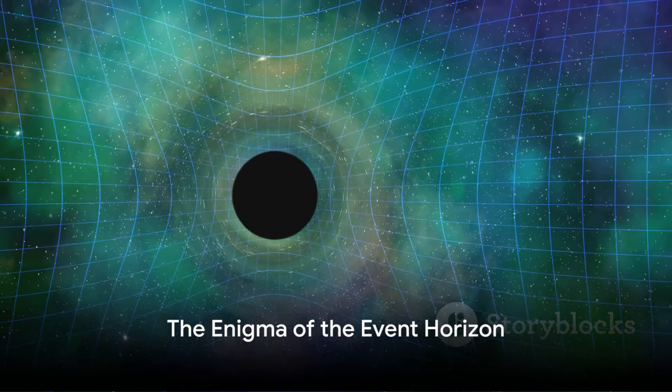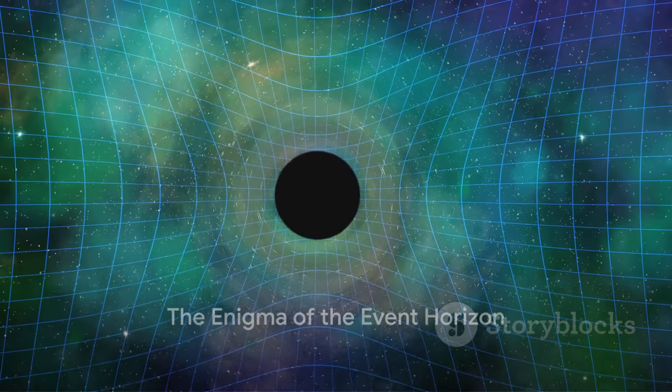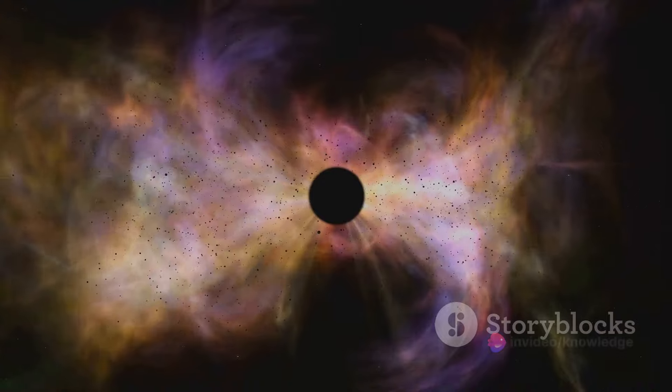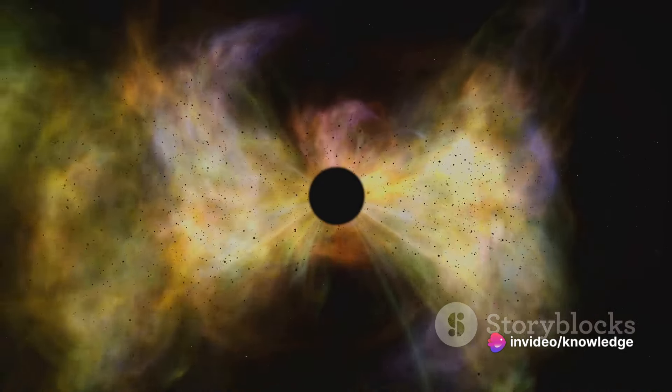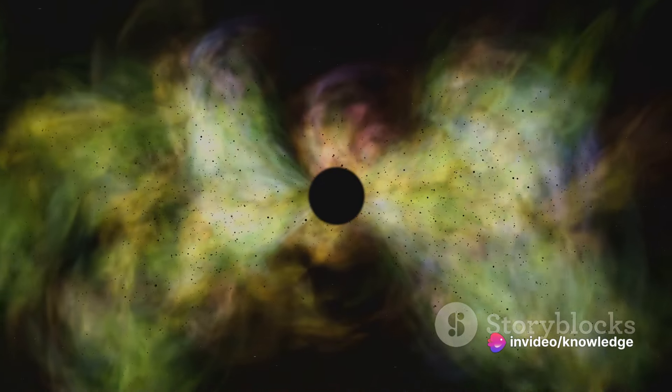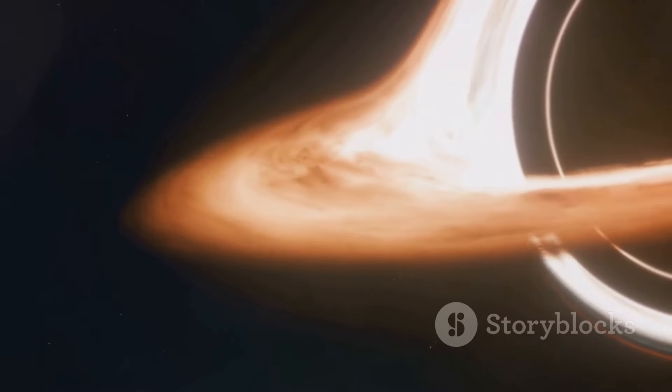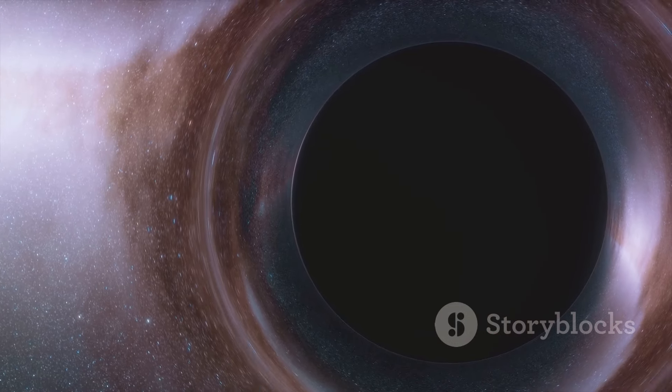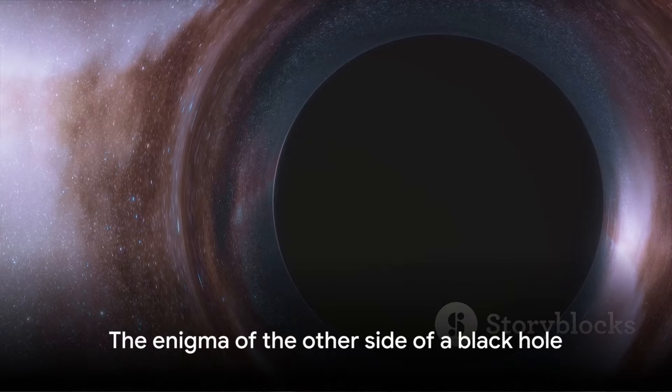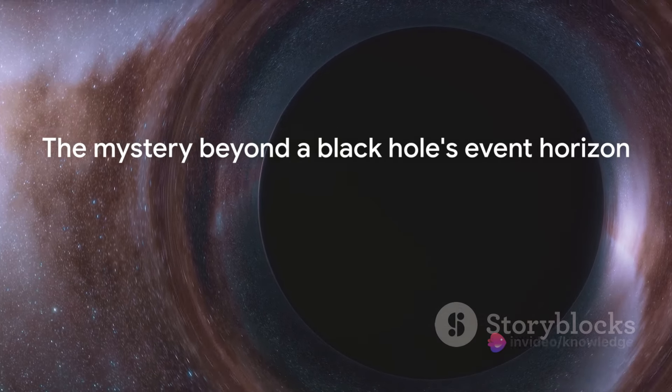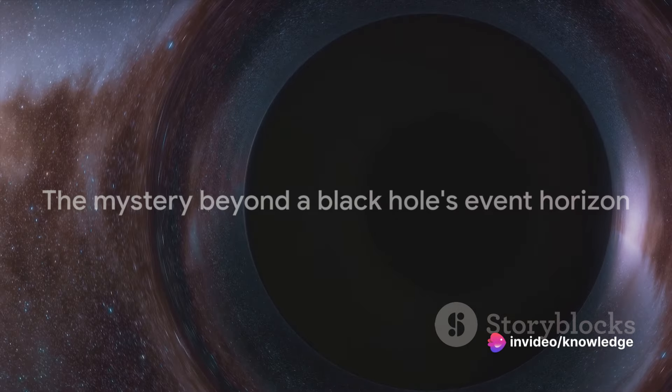To summarize, a black hole is a region of space where gravity is so strong, nothing can escape. They're formed when a massive star exhausts its nuclear fuel and collapses under its own weight. The event horizon is the point of no return, beyond which nothing can escape a black hole's gravity. And as for what's on the other side of a black hole? Well, that's still one of the greatest mysteries of our universe.